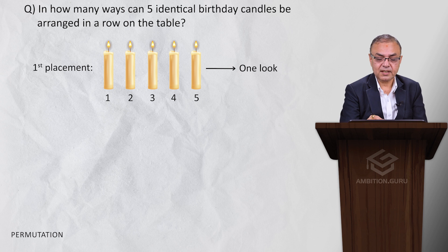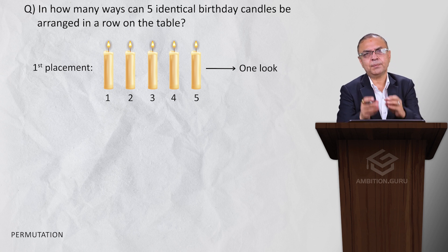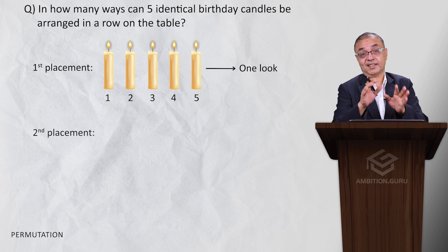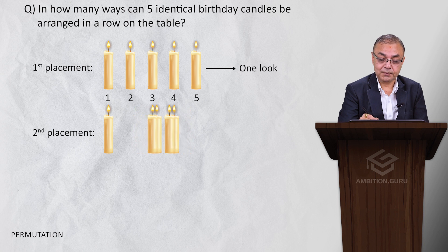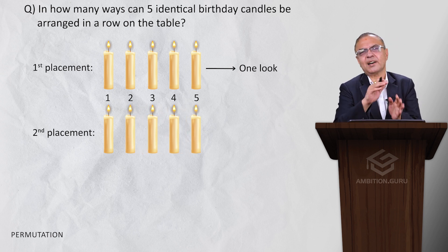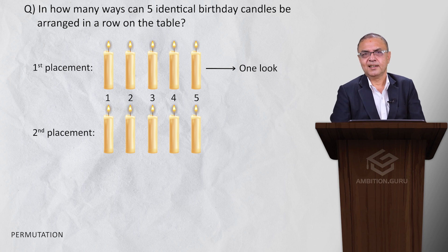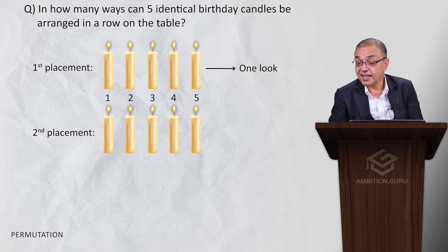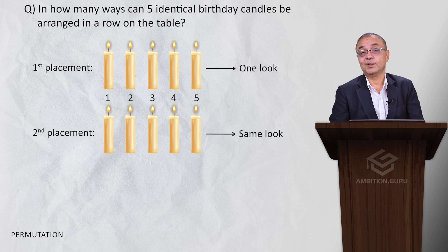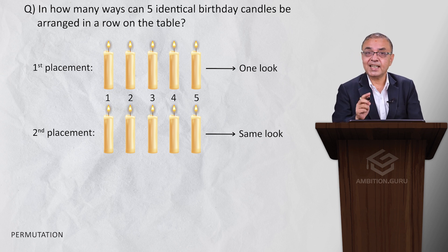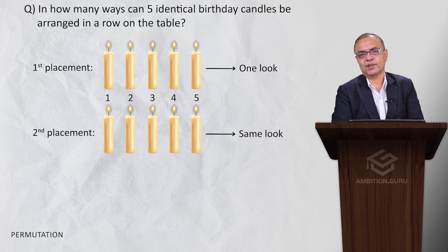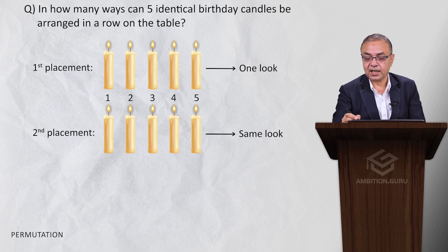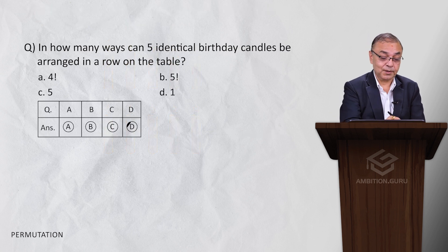In the first place, you will have a good look. Now you have to do a placement — in the second position, you will have to do a placement; in the fifth position, you will have to do a placement. You will have to do a placement repeatedly. The result will be the same look, and the answer will be one more.